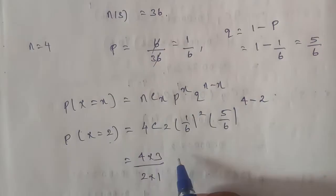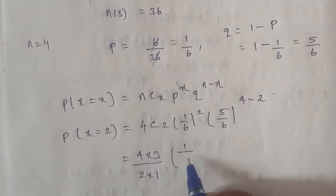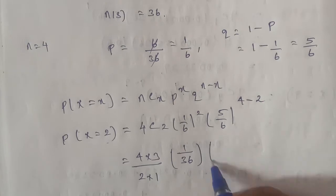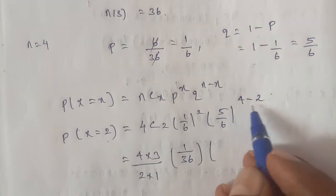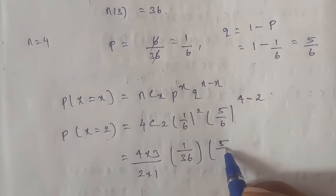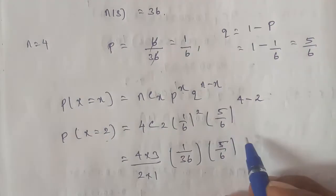Next, 1 by 6 whole power square, so we write 1 by 36. Next, 5 by 6, 4 minus 2 is 2, so 5 by 6 whole power 2.